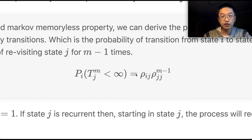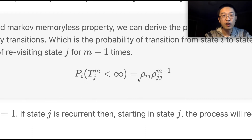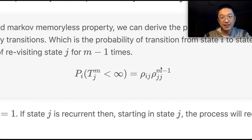Using Bayes' chain rule and the Markov memoryless property, we can derive the probability of the process visiting state j exactly m times in finitely many steps: it equals the probability of transitioning from state i to state j for the first time, multiplied by the probability of revisiting state j for m−1 more times.